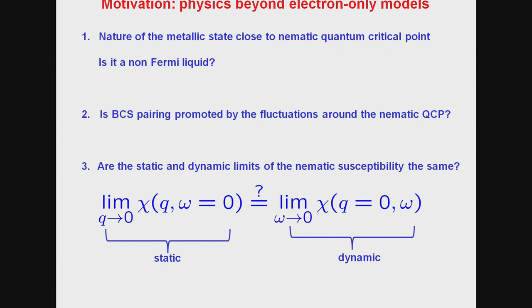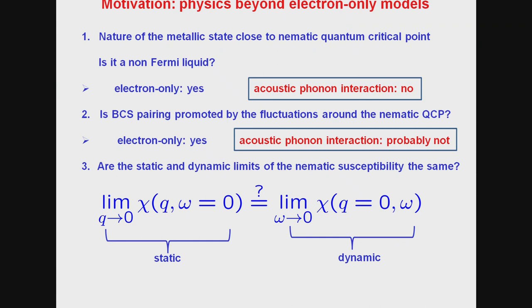So, for example, in the case of the first question, what I will argue is that if we stay within electron-only models, the answer to this question is yes. The state is indeed a non-Fermi liquid. But if you introduce electron-acoustic phonon interaction, then the answer is going to be no. And similarly, for the same physics, what one can show is that one might think that close to a nematic quantum critical point, one would have a boost in the BCS pairing. But indeed, once one puts back the fact that there is electron-phonon interaction, the situation is not so clear. And in all likelihood, the answer, at least in the iron-based systems, is no.